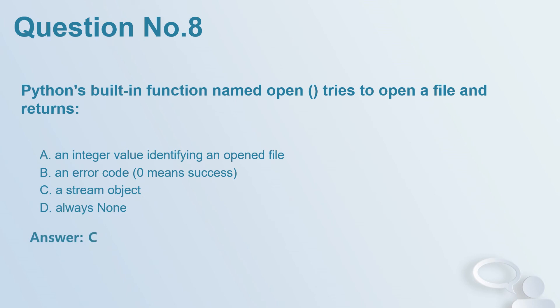Question number 8. Python's built-in function named open tries to open a file and returns: A. An integer value identifying an opened file. B. An error code, zero means success. C. A stream object. D. Always none. Answer: C.